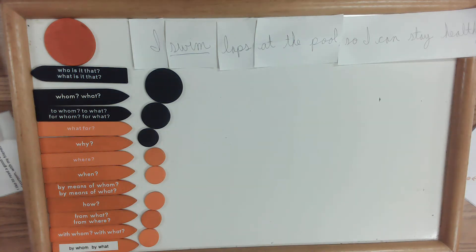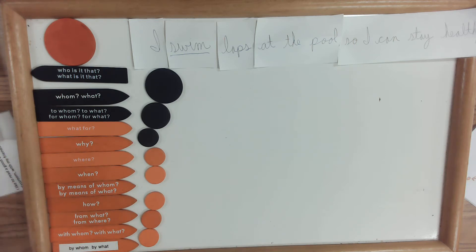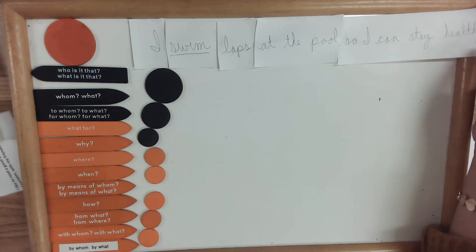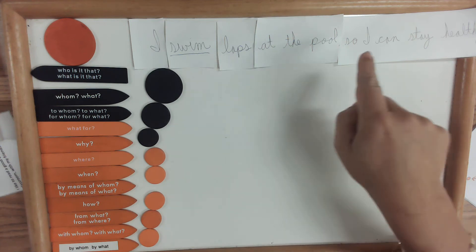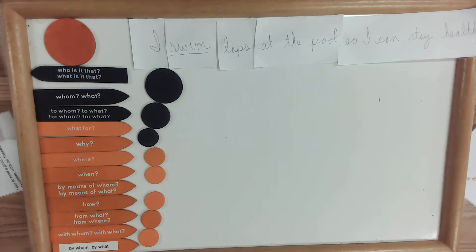Here is a video lesson where we look at sentence analysis, focusing on the orange arrows or the adverbial modifiers. First thing you always do is start off and write a sentence. Sentences can get quite long, so I have: I swim laps at the pool so I can stay healthy.